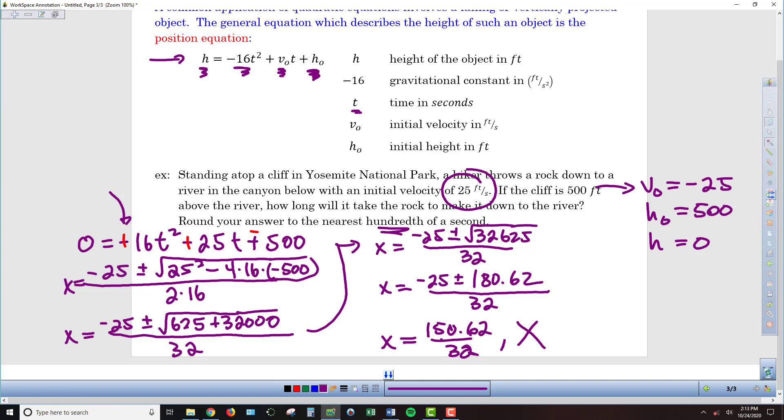And so, the last thing we've got to do is divide this 155, that should be, so sorry about the lag on the pen. So, 155.62 divided by 32. And so, in the end, we get a time of 4.86 seconds for this rock to leave the hiker's hand